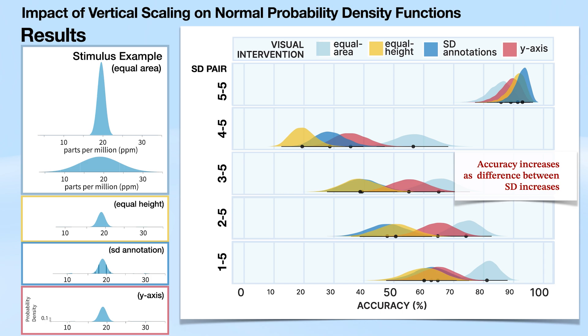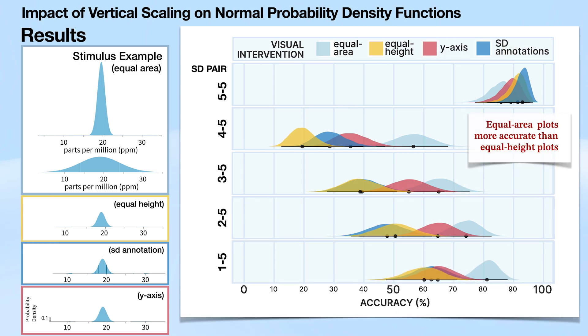So the main takeaways that we can see from these results is that accuracy in general increases as the difference between the standard deviations increase. So as the two plots that people are comparing become visually more distinct and have a larger difference between their standard deviations, accuracy goes up. And we also see consistently that equal area plots, which are these PDFs circled in light blue over on the right here, are more accurate than the equal height plots, which are the yellow ones on the left.